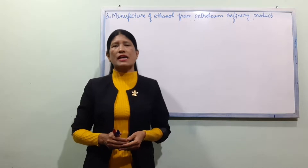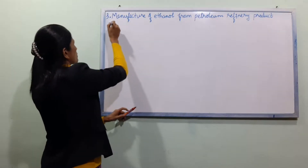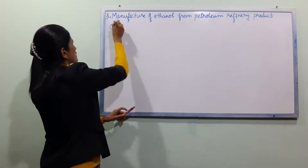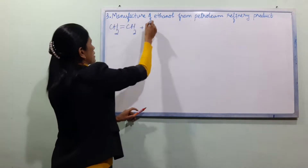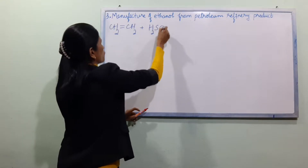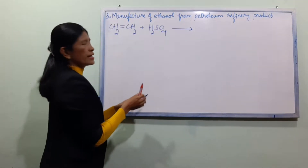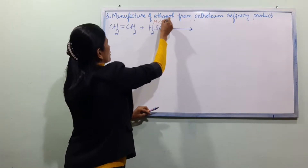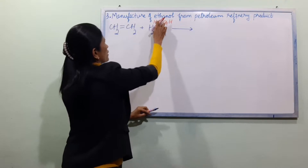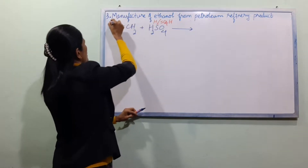Now we are going to look at this reaction. We have CH2=CH2 plus H2SO4, giving H-OSO4H, that is ethyl hydrogen sulfate.